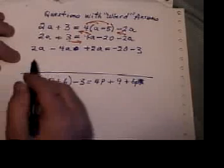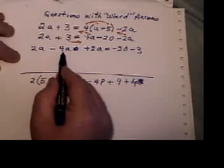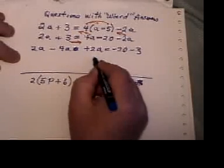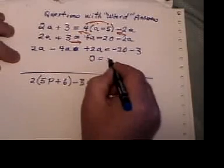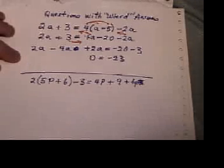Now the left hand side we have 2A minus 4A, which is negative 2A, plus 2A. It works out to zero. The right hand side is minus 23. Uh-oh. I know zero doesn't equal negative 23.